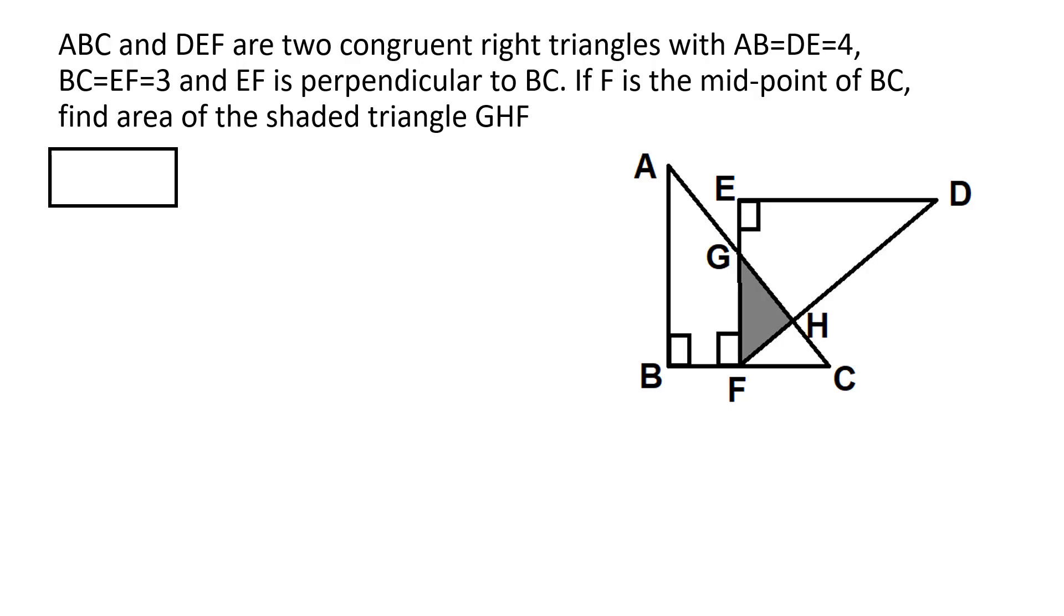ABC and DEF are two congruent right triangles with AB equal to DE equal to 4, BC is equal to EF equal to 3 and EF is perpendicular to BC. If F is the midpoint of BC, what's the area of the small shaded triangle GHF that's enclosed between these two congruent triangles ABC and DEF?